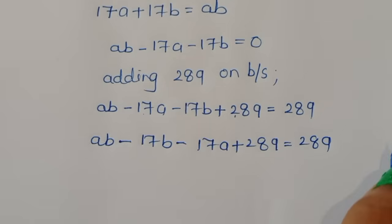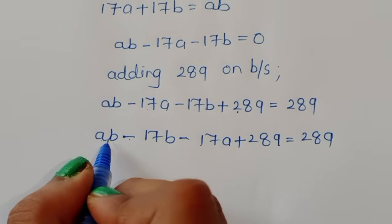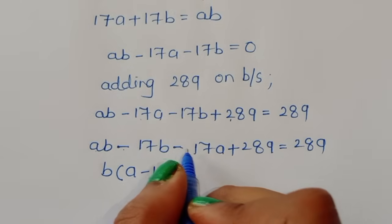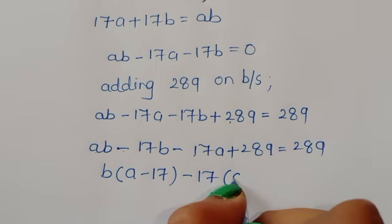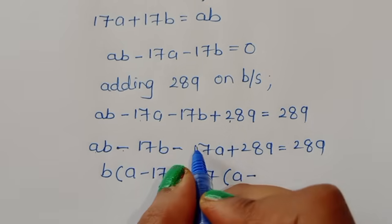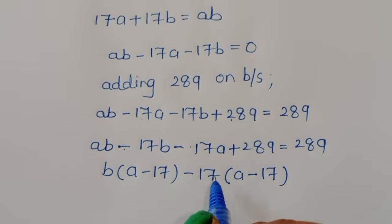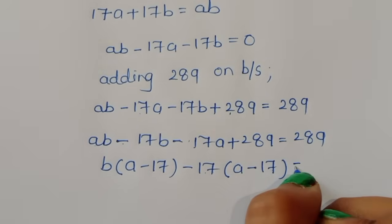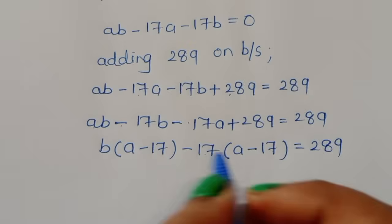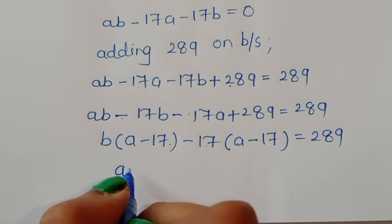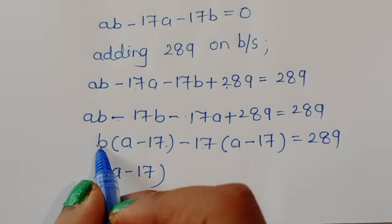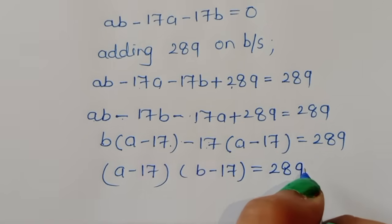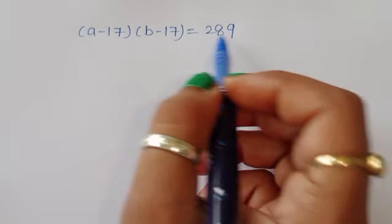We rewrite the left-hand side as ab - 17b - 17a + 289 = 289. Taking b common from the first two terms: b(a - 17), and factoring the remaining terms as -17(a - 17). So we get (a - 17)(b - 17) = 289.